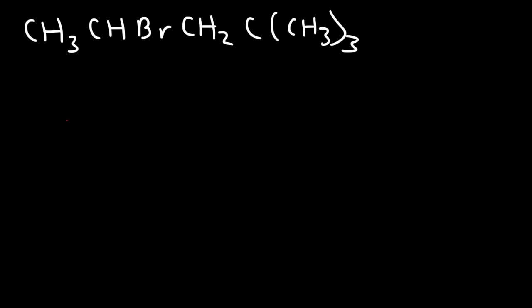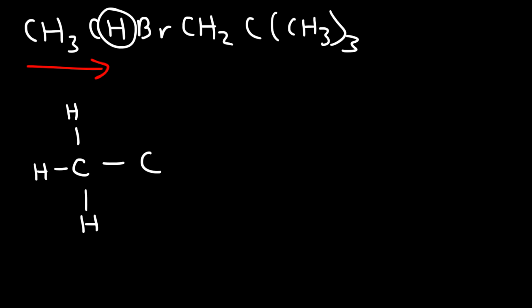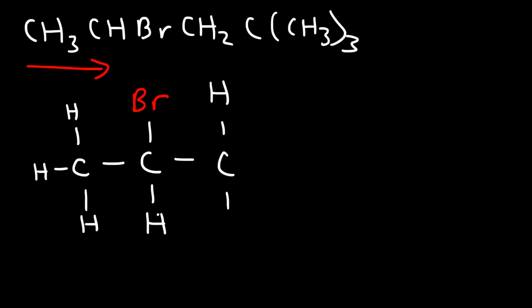Starting with the carbon on the left and working our way towards the right — that carbon has three hydrogen atoms attached to it. And then it's attached to a carbon atom which has a hydrogen and a bromine atom attached to it as well. And then after that we have a CH2, so that's a carbon with two hydrogens. And that's attached to another carbon.